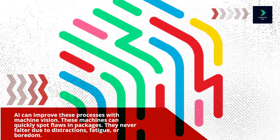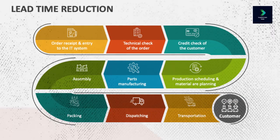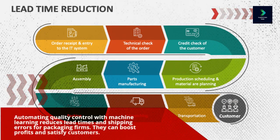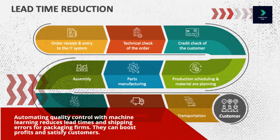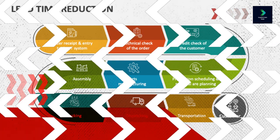They never falter due to distractions, fatigue, or boredom. Automating quality control with machine learning reduces lead times and shipping errors for packaging firms. They can boost profits and satisfy customers.